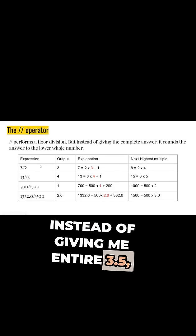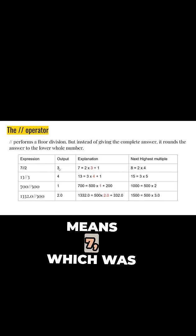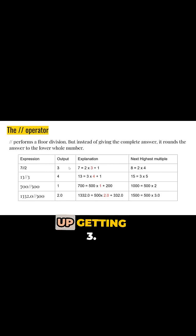Instead of giving me 3.5, it returns the lower whole number, which means 7 was 2 times 3 plus 1. The remainder of 1 was ignored, so I end up getting 3. Similarly, 13 floor division 3 is 4.